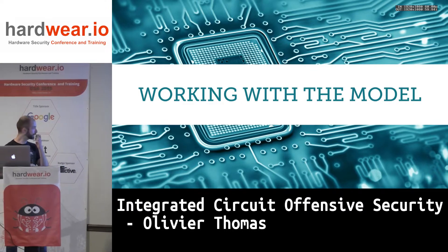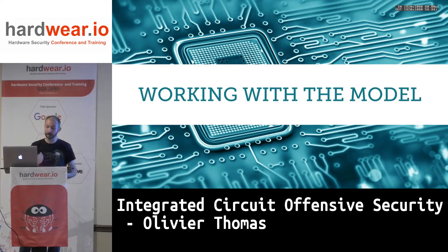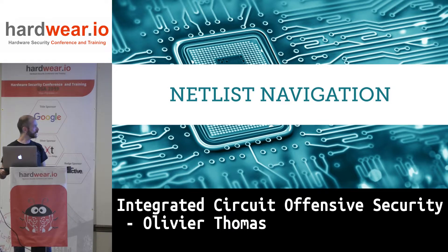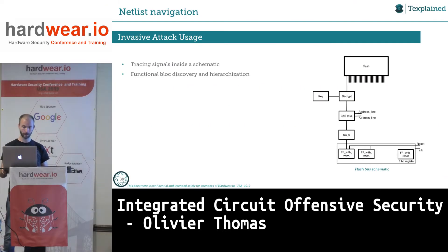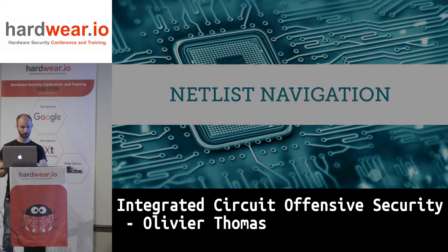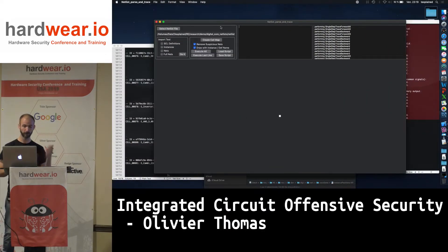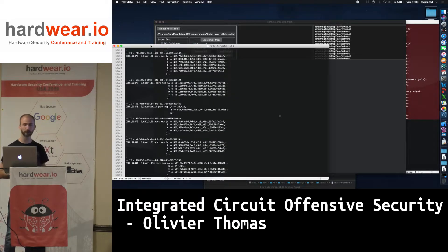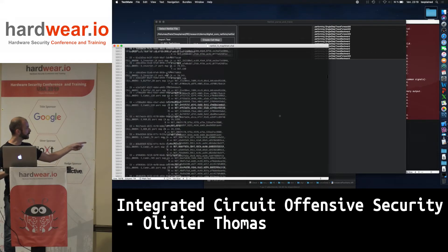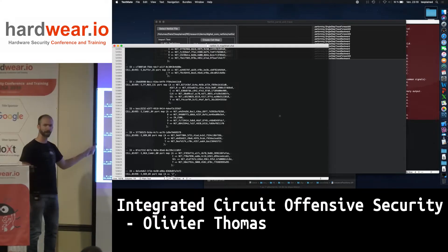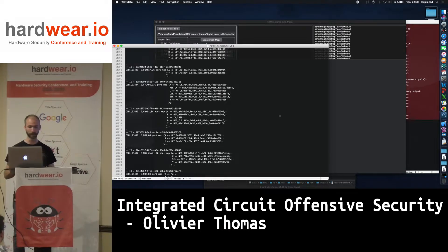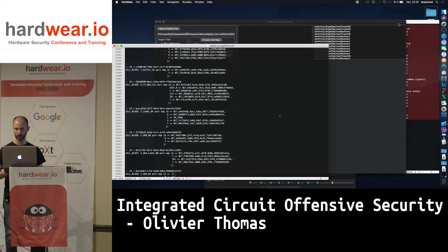Now let's see what we can do with a VHDL model of a chip. The first thing is how do you navigate the netlist. I used to draw schematics on paper on the floor, which is a bit funny. I have a small signal tracing tool here. This is the netlist — thousands of lines. The cursor is at line 55,000 already. Reading a flat netlist is not something you want to do.